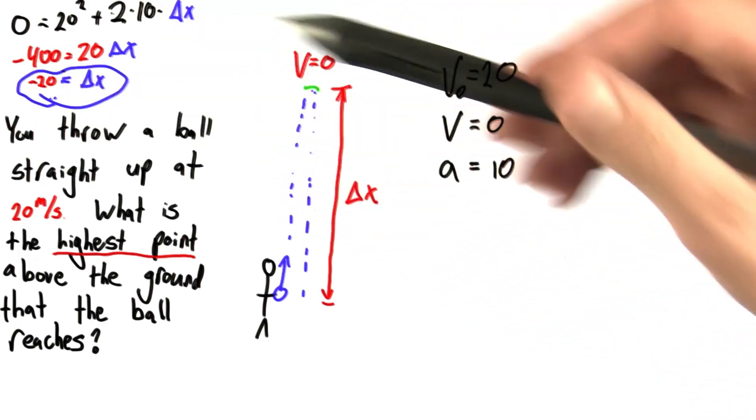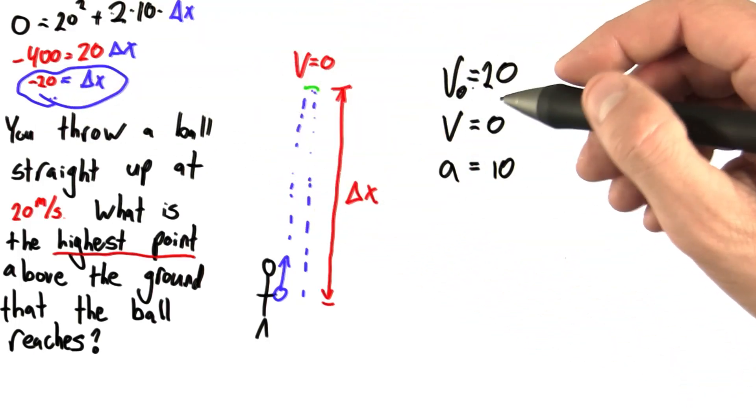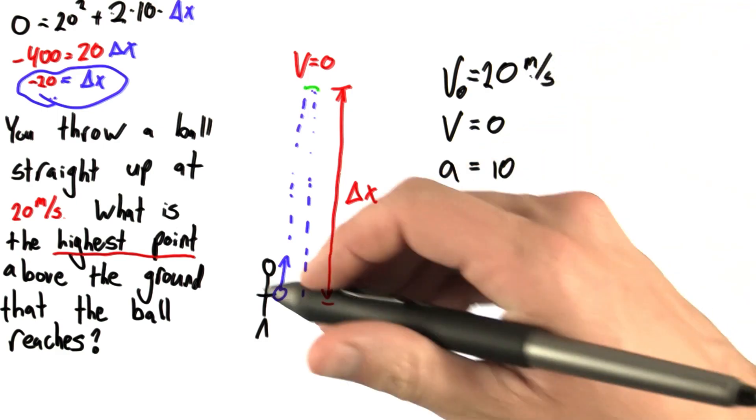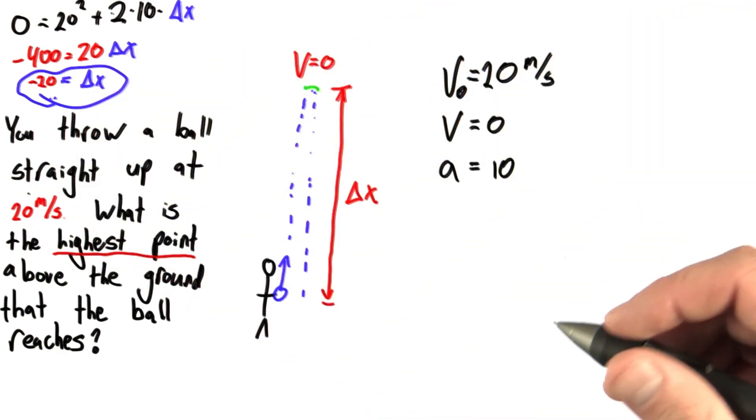This negative makes me think we may have made a mistake. So let's look at our variables. Well, we said the initial velocity was 20 meters per second. Yeah, that was absolutely true. We threw it up at 20 meters per second.